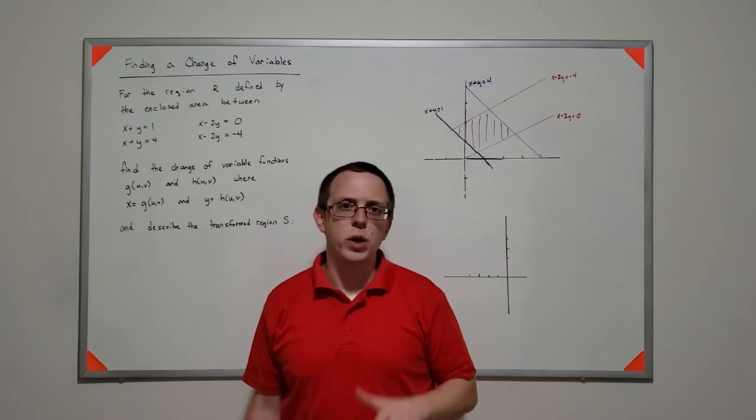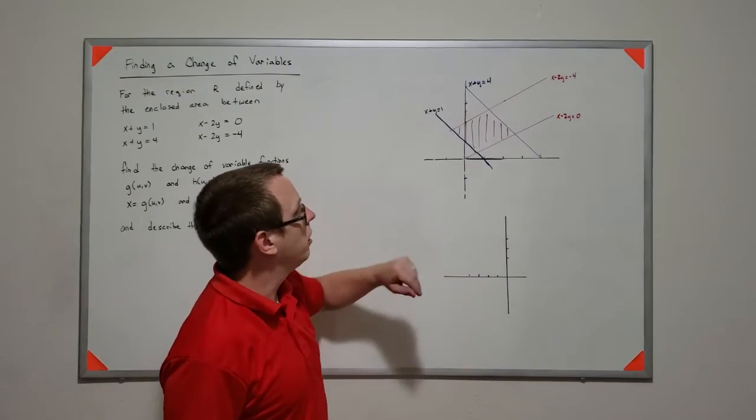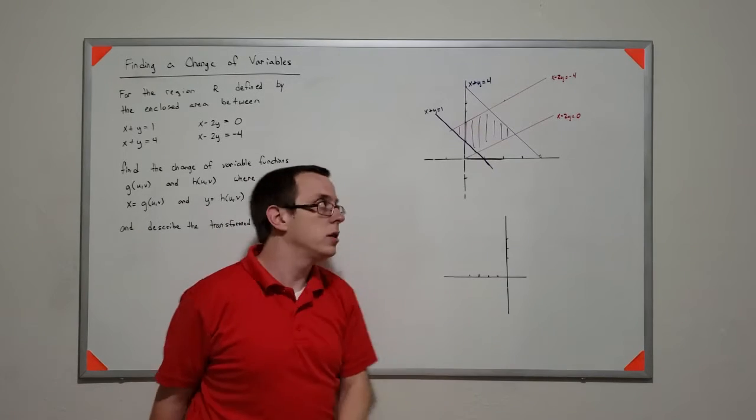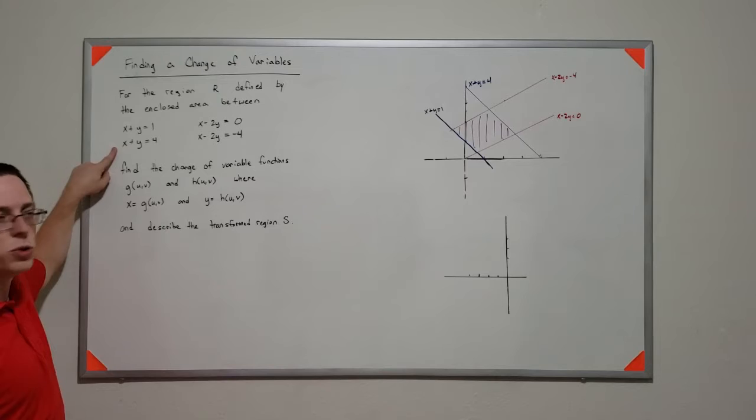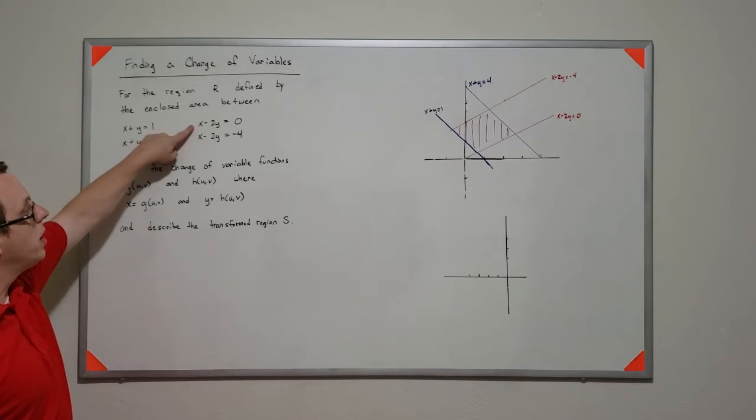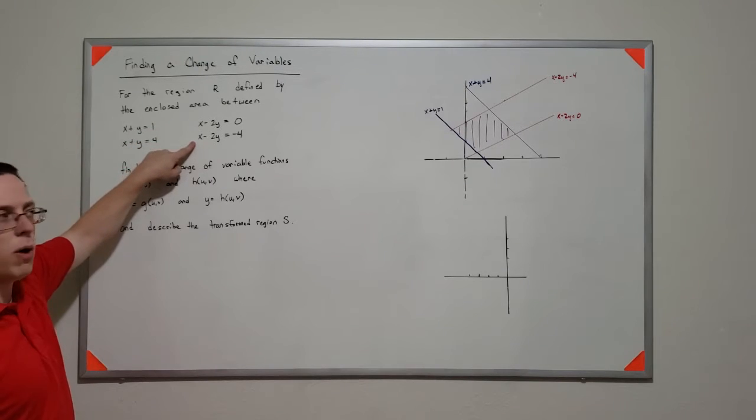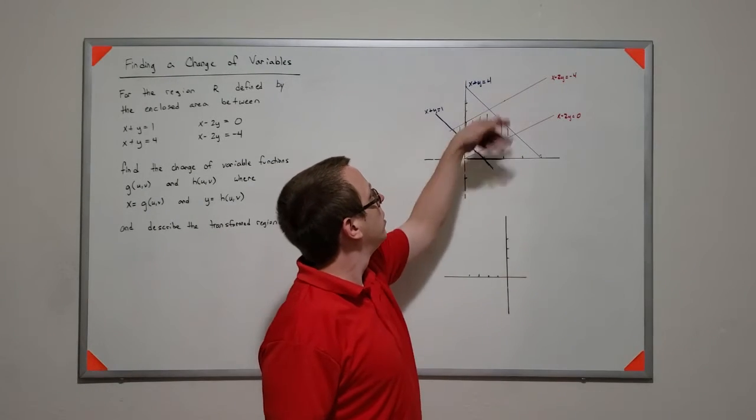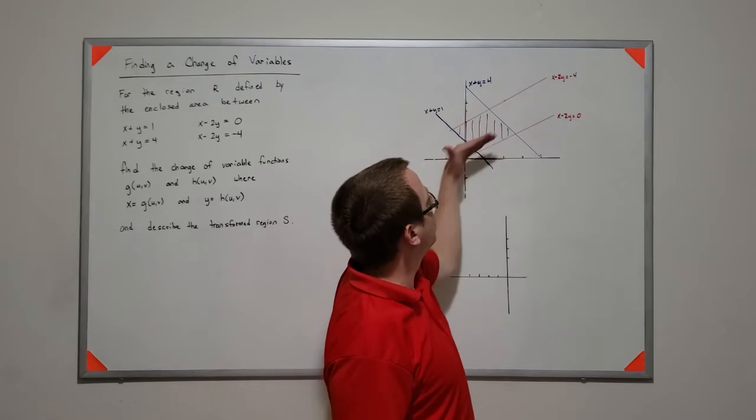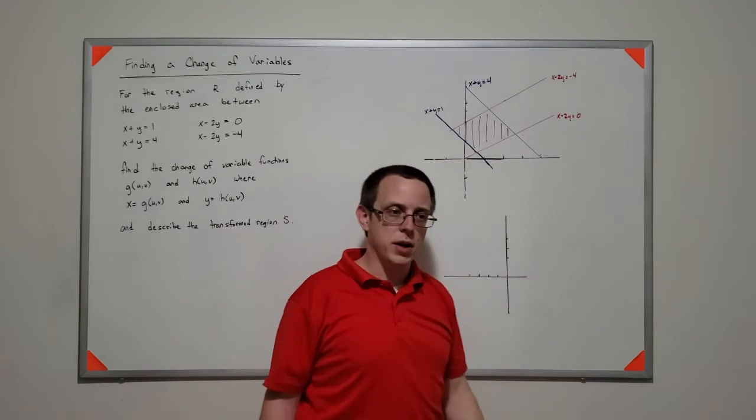So let's suppose we have some region that's defined here. We have four lines: x plus y equals 1, x plus y equals 4, x minus 2y is 0, and x minus 2y is negative 4. And let's say we draw those four lines. The blue ones are the x plus y's and the red ones are the x minus 2y's.